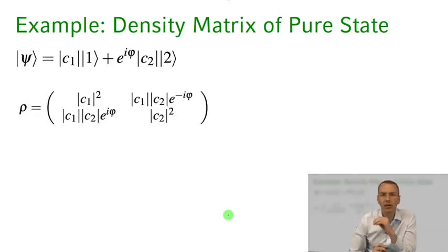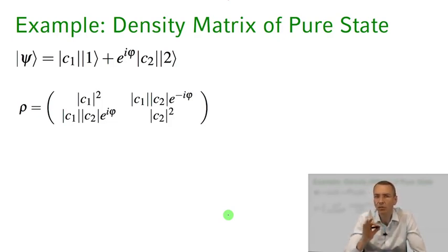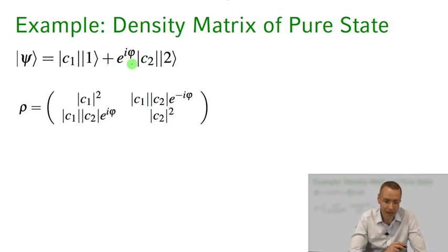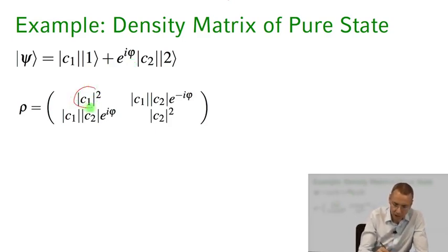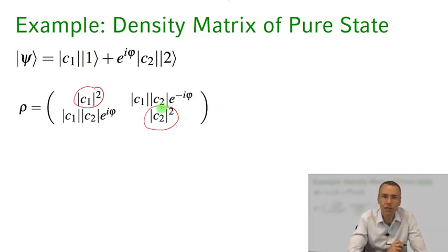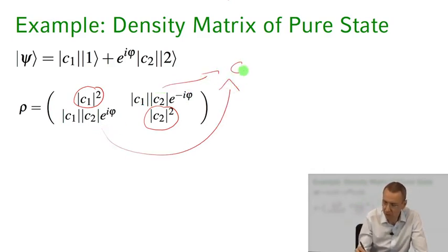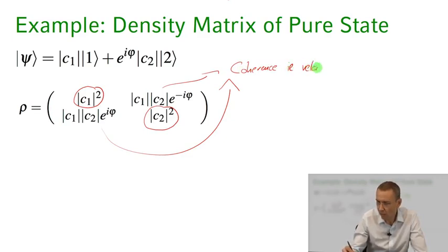To familiarize ourselves more with the density matrix, let's take the simple case of a pure state. We write state psi with amplitudes |C1|, |C2|, and relative phase factor e^(i·phi). The diagonal matrix elements — the populations — are just |C1|² and |C2|² for a pure state. The off-diagonal elements tell us about the coherence, i.e., how well the relative phase is defined between states one and two, and these carry the phase factor e^(i·phi).